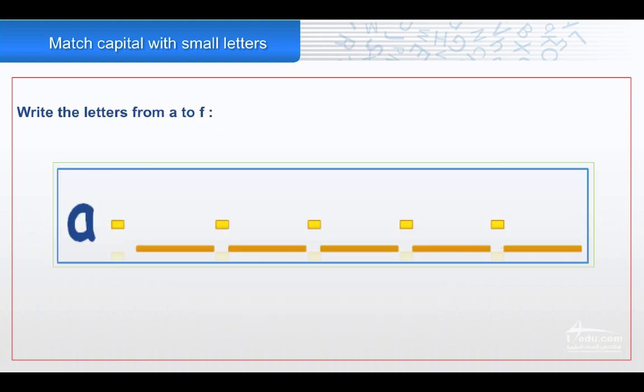Now we want to write the letters from A to F. We have A already, we have A already, B.